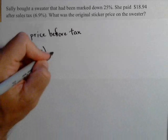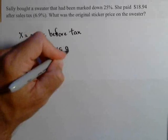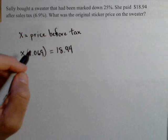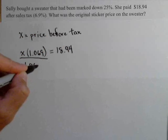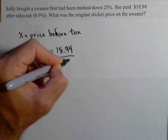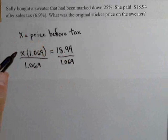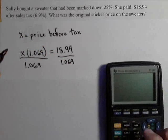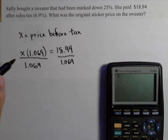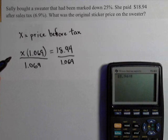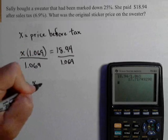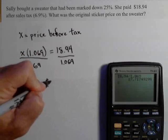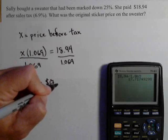Now, what she paid after taxes is $18.94 and so we start working backwards. Let's get her price before tax. We're going to divide both sides by 1.069. And this would be what it was with the 25% off. We'll bring in our calculator here. And we have 18.94 divided by 1.069. And we'll round that off to two decimal places since we're dealing with money. So before taxes, her price was $17.18.